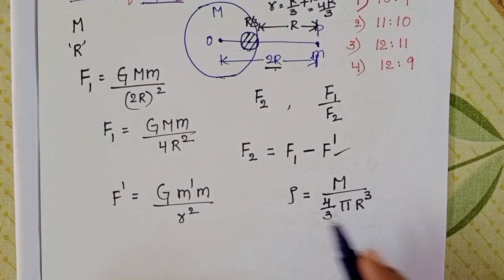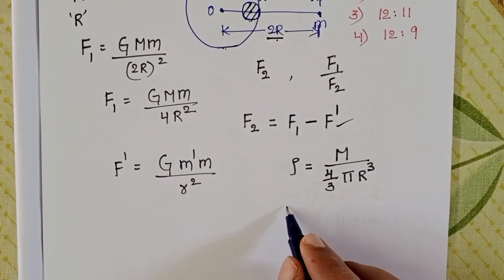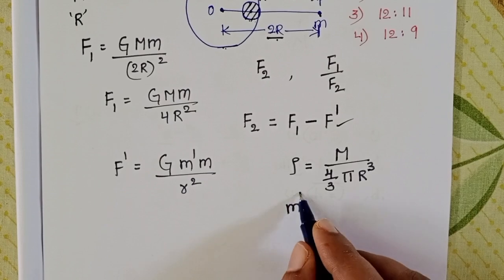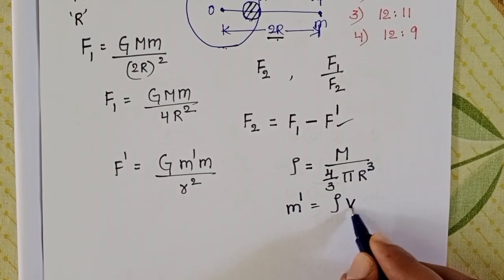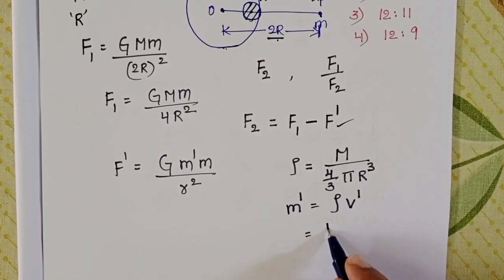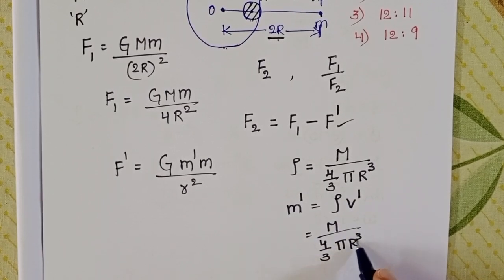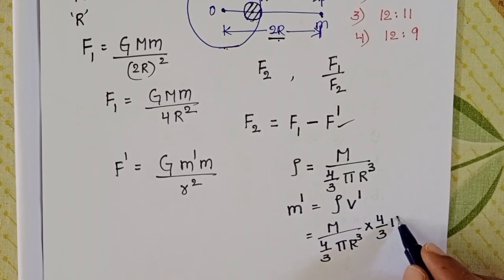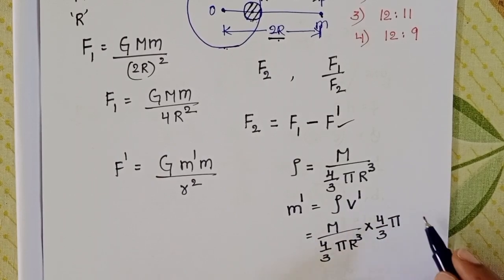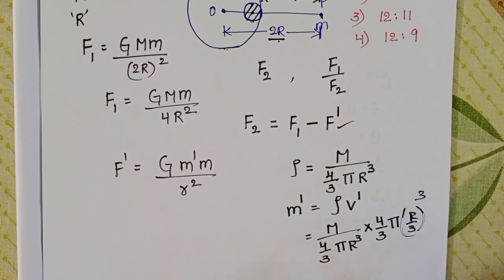Now we want the mass of the small sphere. M' equals rho times the volume of the small sphere: rho = M / [(4/3)πR³], times the volume of the small sphere (4/3)π(R/3)³.